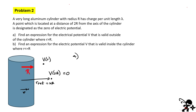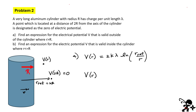Part A is very straightforward. When you're on the outside of the cylinder, the expression is exactly the same as the wire expression derived earlier: V of R equals 2K lambda times the natural log of the reference point divided by R. Since the reference point is 2R, this simplifies to V of R equals 2K lambda times the natural log of 2R over R, valid as long as R is greater than the radius of the cylinder.